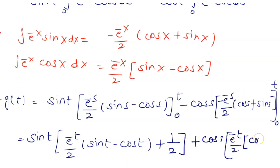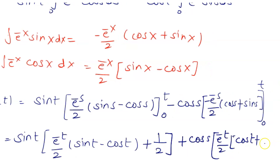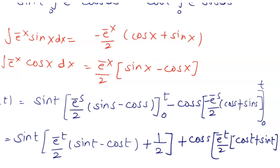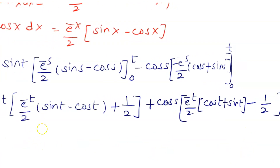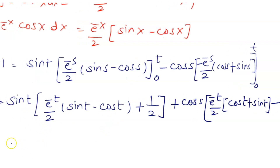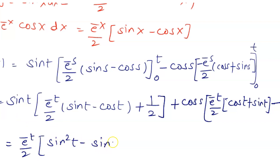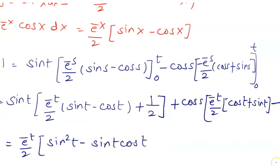Similarly applying the result for e^(-s)sin(s) ds and its lower limit with cos(0)=1 gives a contribution of -1/2. After collecting all terms we have: e^(-t)/2 · [sin²(t) - sin(t)cos(t)] + 1/2·sin(t), minus cos(t) times e^(-t)/2 · [-cos²(t) - sin(t)cos(t)] minus 1/2·cos(t).